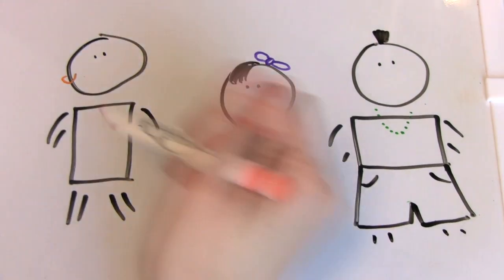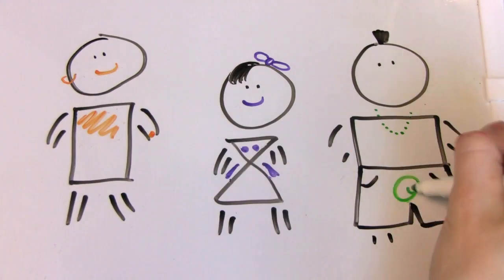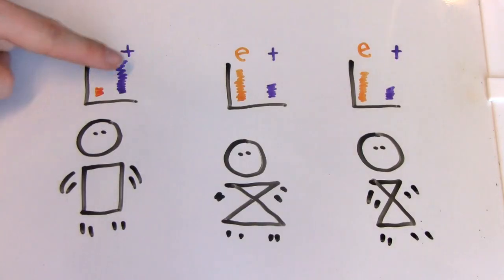Some people use clothes or objects, like chest binders, padding, and packers, to make their bodies reflect their identities. Some people take hormones,